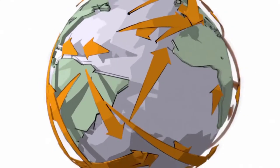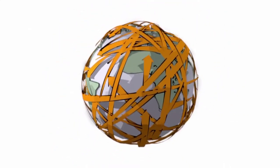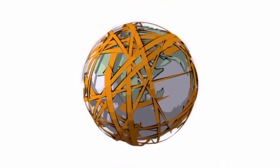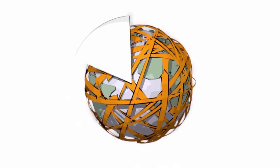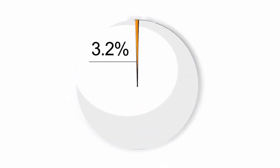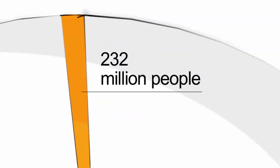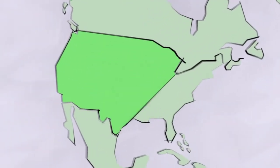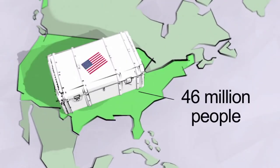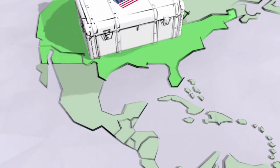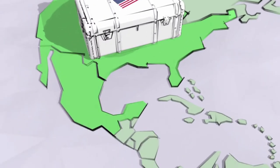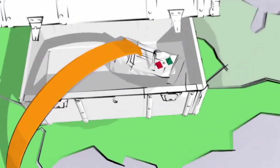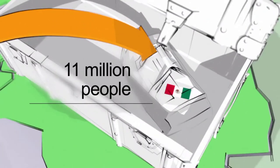Globally, legal migration has grown by 50% in the last 25 years. Currently, 3.2% of the global population, or 232 million people, are considered to be migrants. The United States has the largest number of migrants, hosting 46 million, or 20% of the world's total migrant population. Mexican immigration is particularly significant, given that Mexicans are the biggest group of immigrants in the world, with 11 million Mexicans living in the United States.